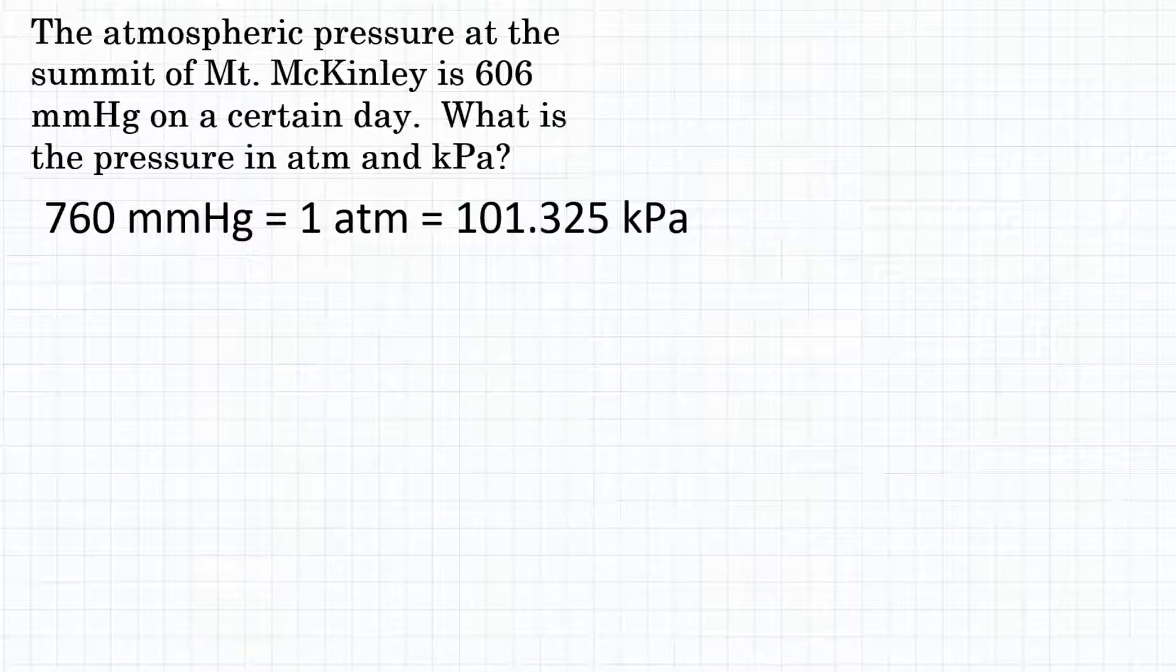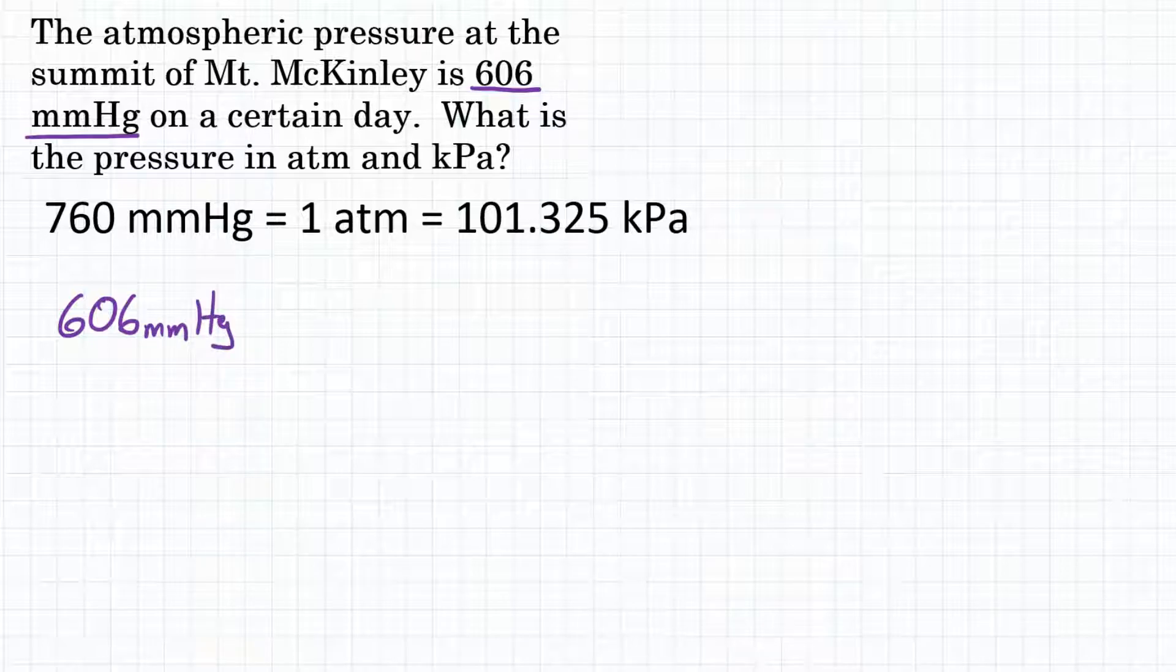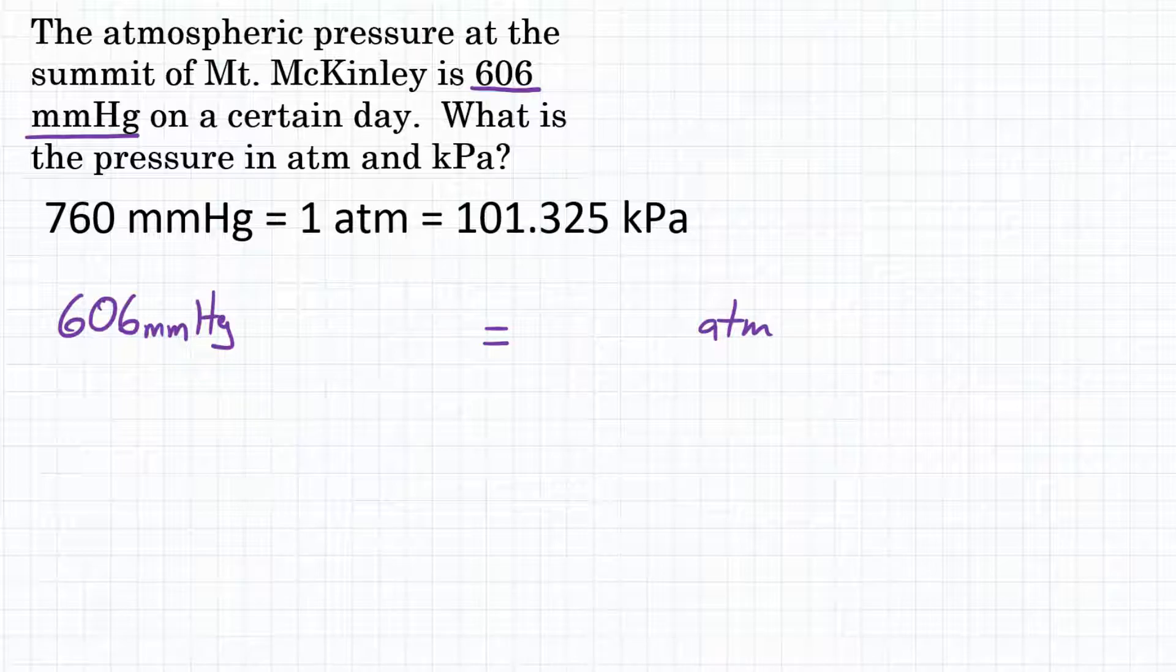So this problem is asking us to do two simple pressure unit conversions. And to do those, we're going to need that we have a pressure of 606 millimeters of mercury. So we're going to start with 606 mmHg, and we are going to convert that to atmospheres. And then we're going to take that 606 mmHg again and convert that to kilopascals.